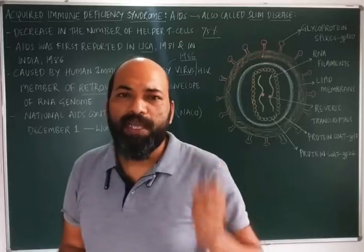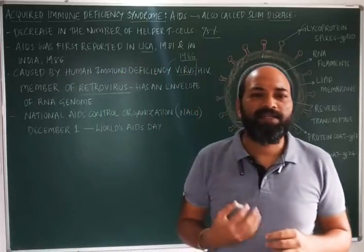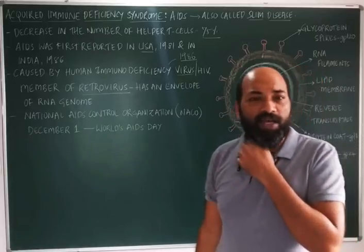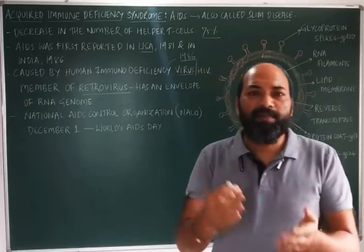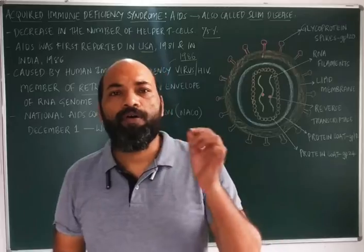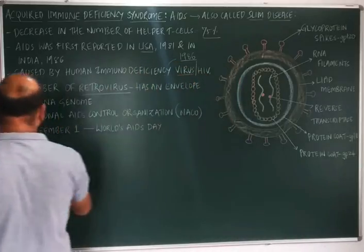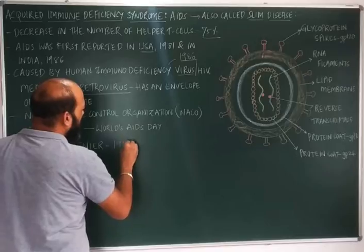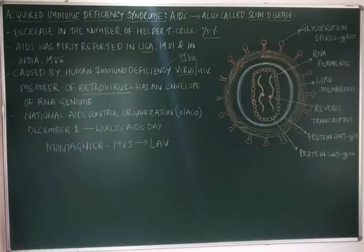HTLV1, discovered by Robert Gallo in the 1970s, was able to cause leukemia. Later, Montagnier in the year 1983 discovered that AIDS was caused by a virus he named LAV — Lymphadenopathy Virus. In the year 1986, the name was formally changed to HIV — Human Immunodeficiency Virus.